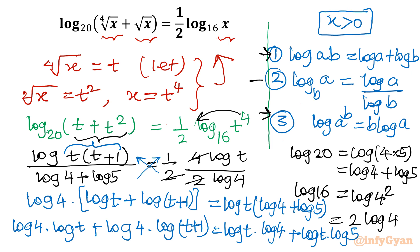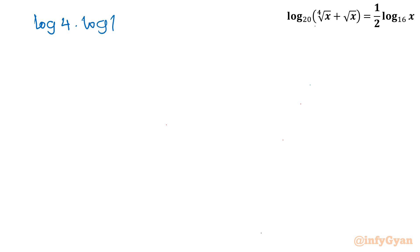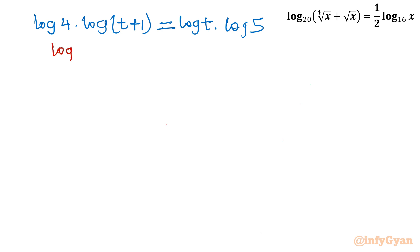We can cancel the common term log 4 · log t from both sides. What remains is: log 4 · log(t+1) = log t · log 5. Rearranging, we get log(t+1) / log t = log 5 / log 4.